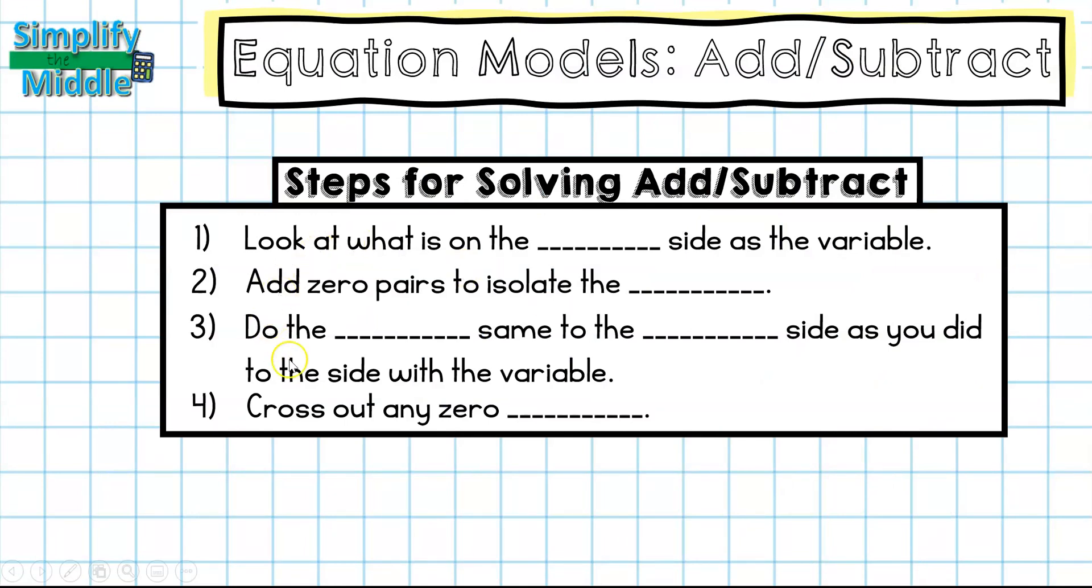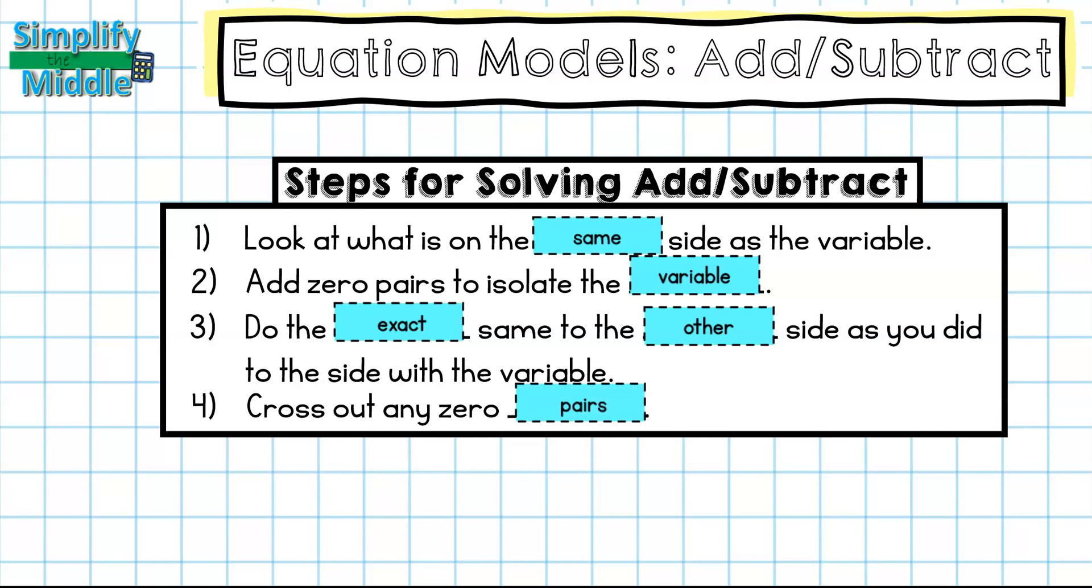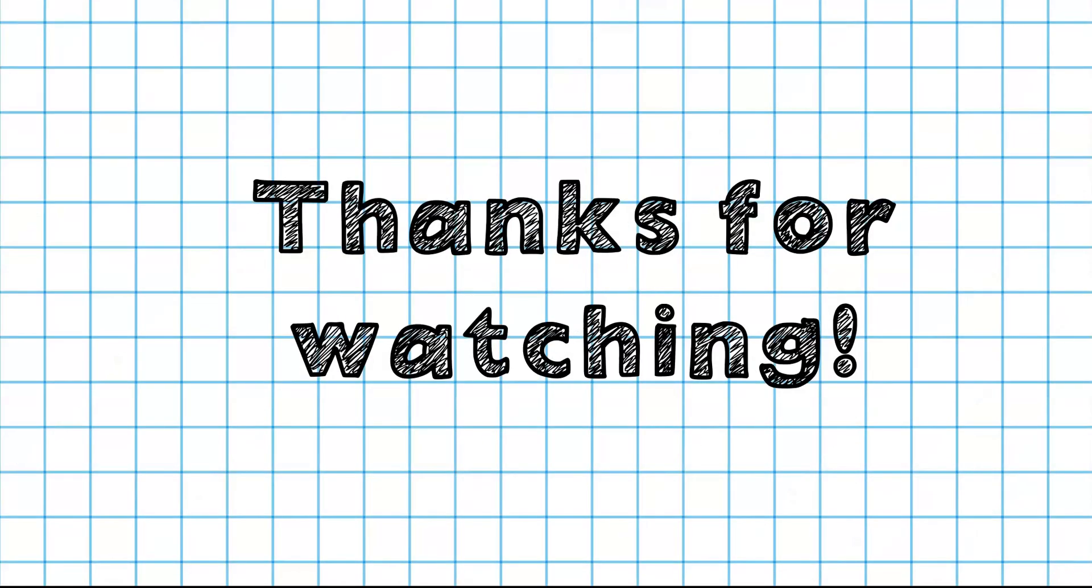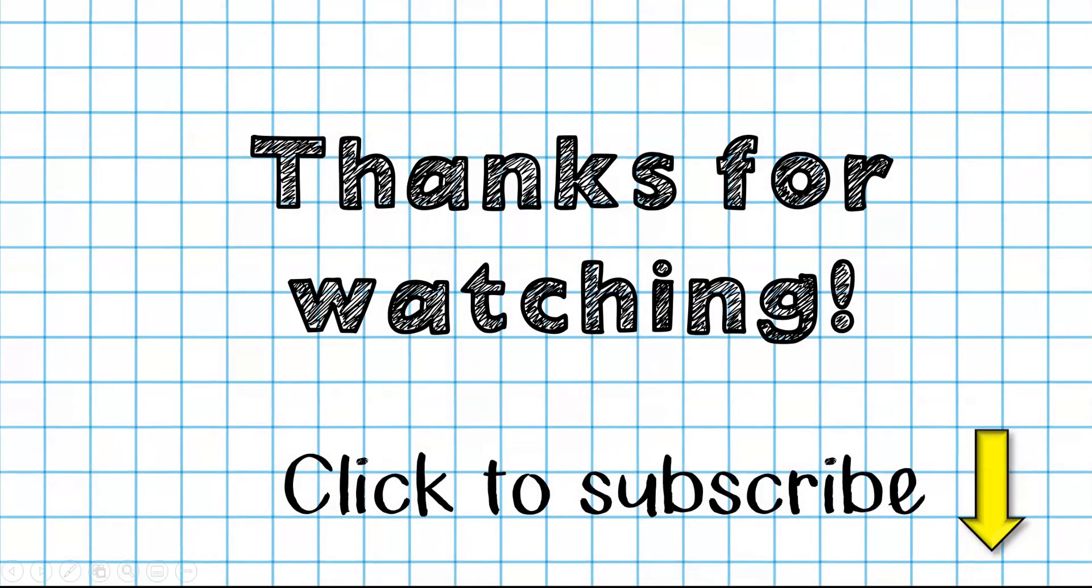Let's recap our steps for solving adding and subtracting problems with the algebra tile mats. Look at what is on the same side as the variable. You want to add zero pairs to isolate the variable. Do the exact same to the other side as you did to the side that had the variable. And finally, cross out any zero pairs. That wraps up our lesson. Thanks so much for tuning in. Feel free to click to subscribe for this and other lessons. Until next time!